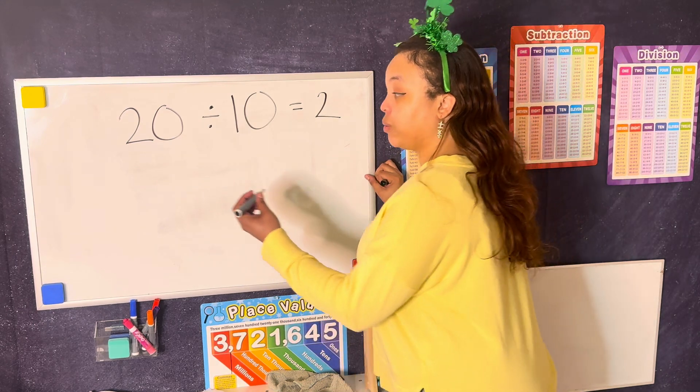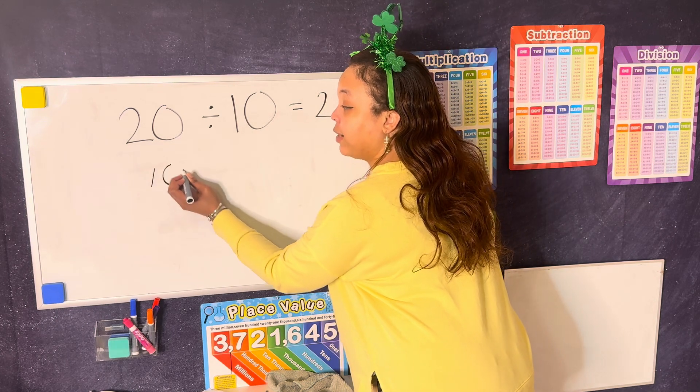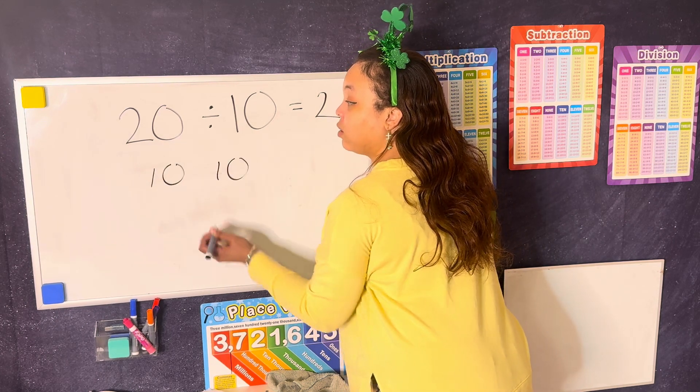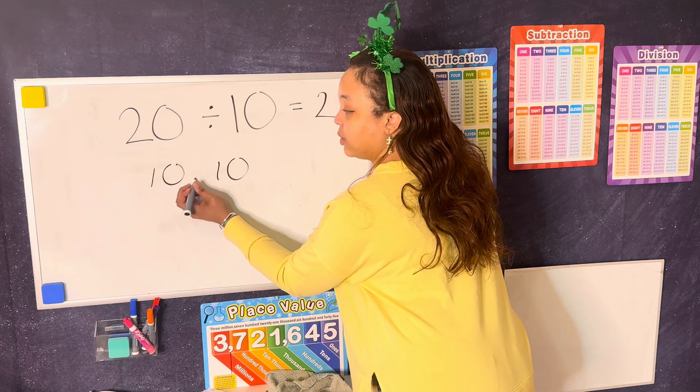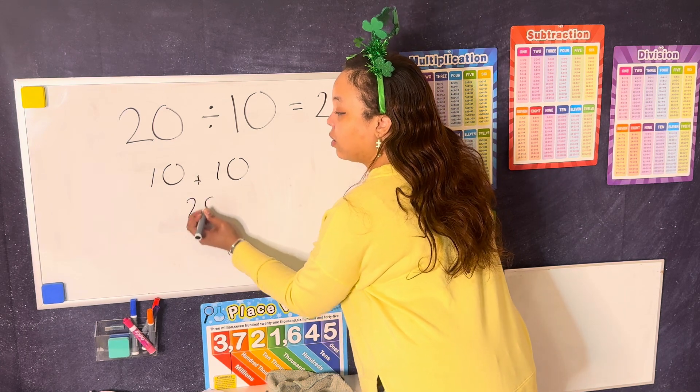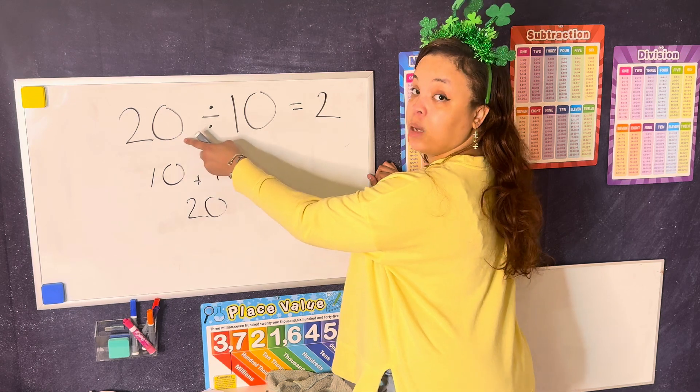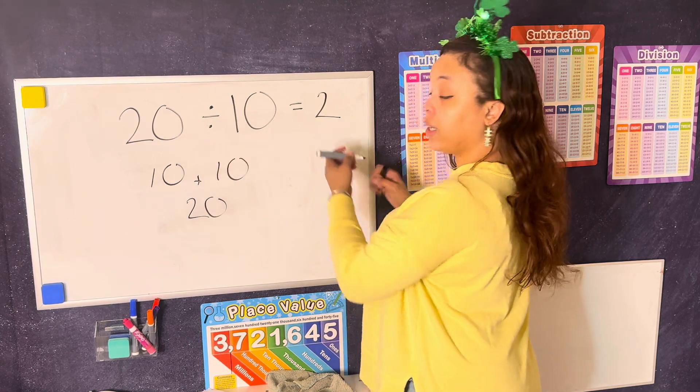When you want to see the groups written out. One group of 10. Another group of 10. This plus this gives you 20. Which means it is 2 groups that make up 20. So yes, your answer is 2.